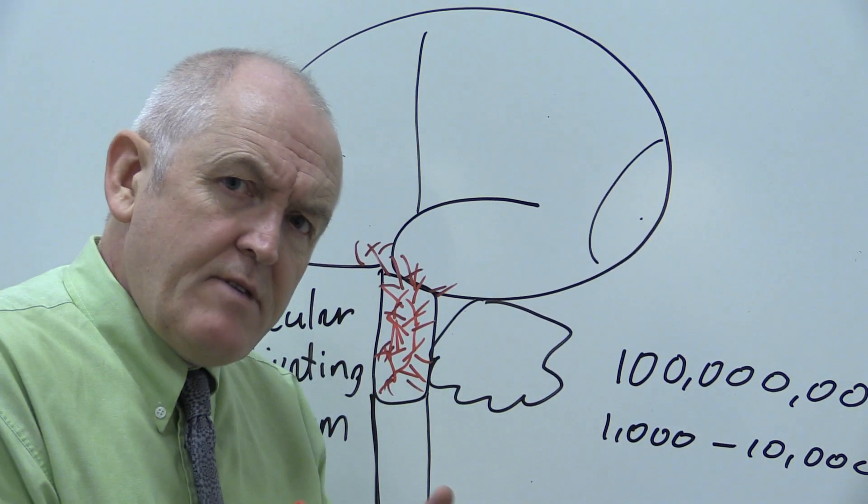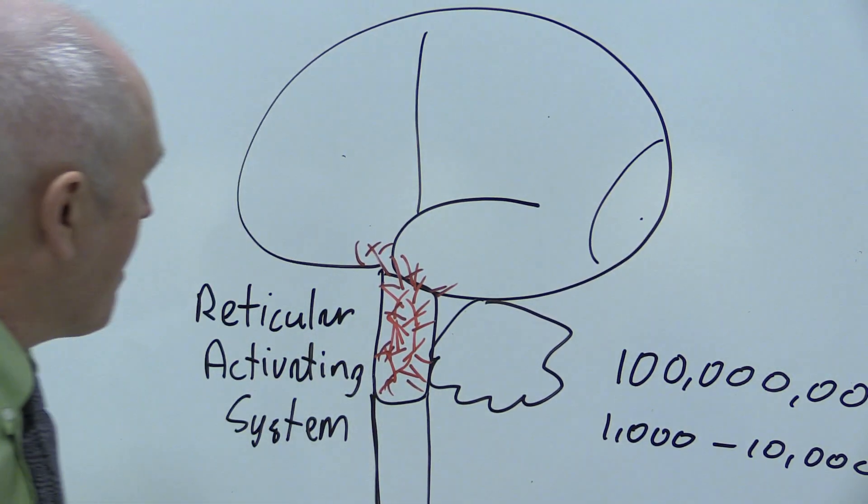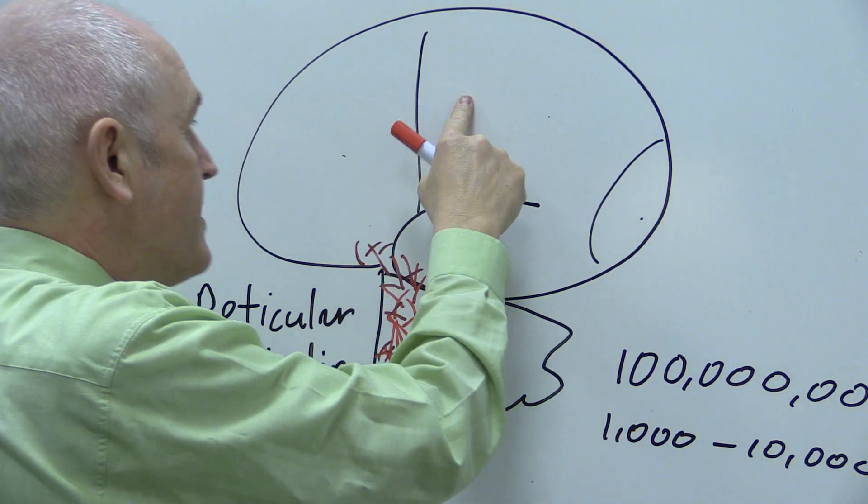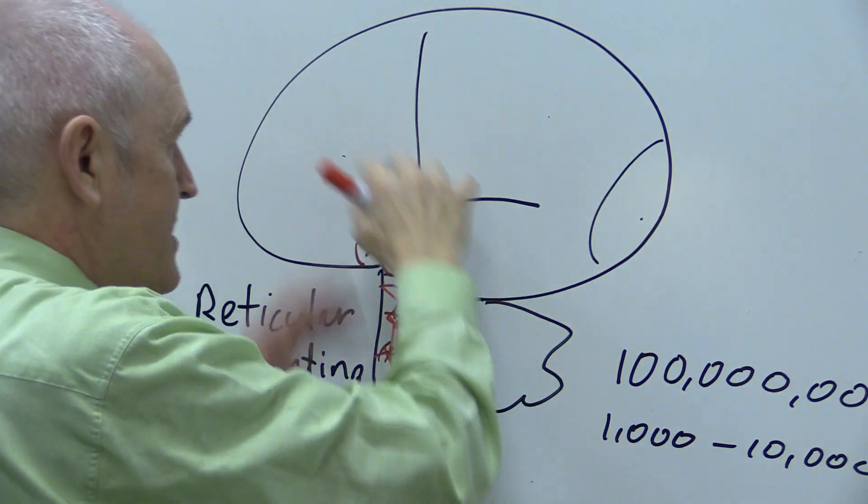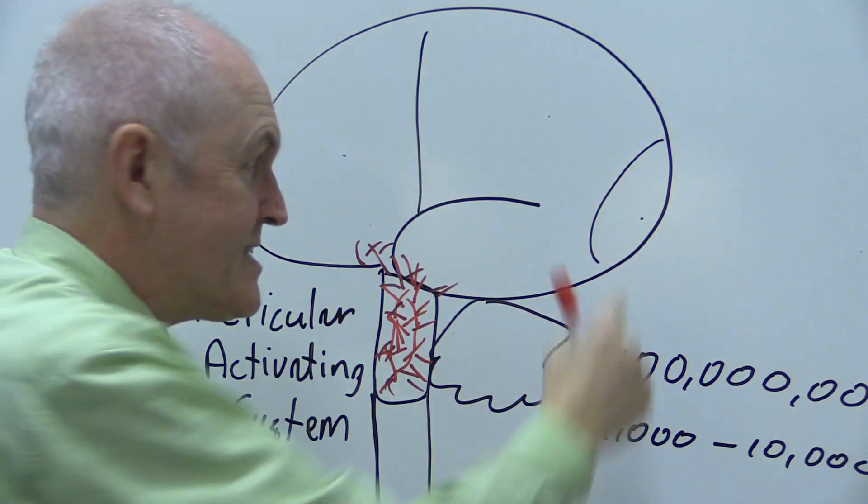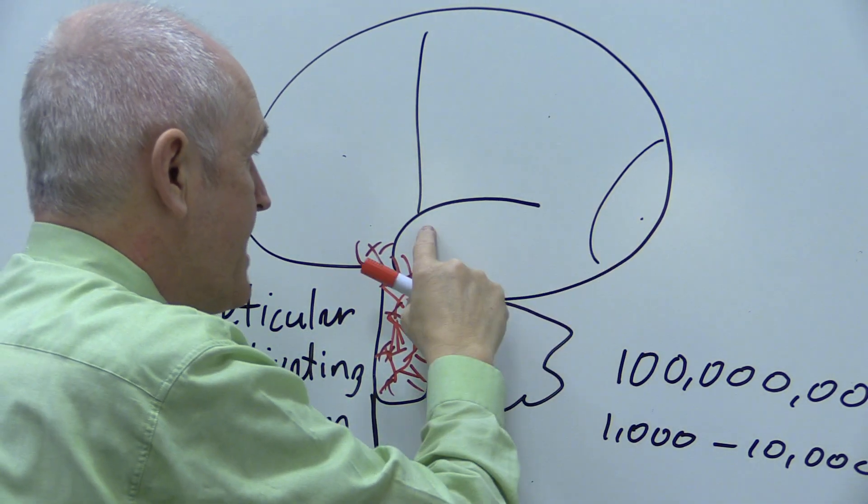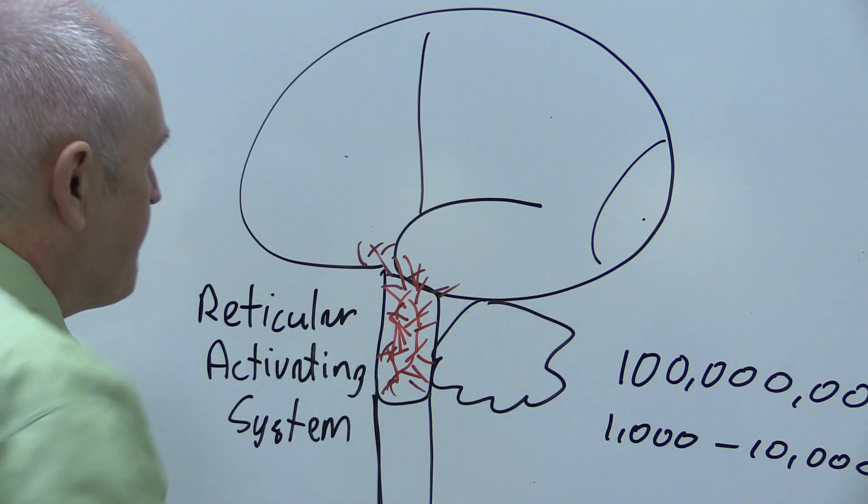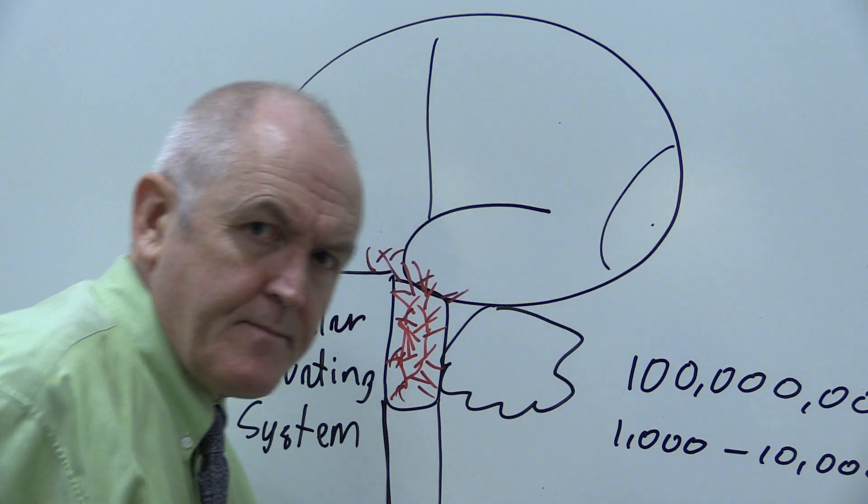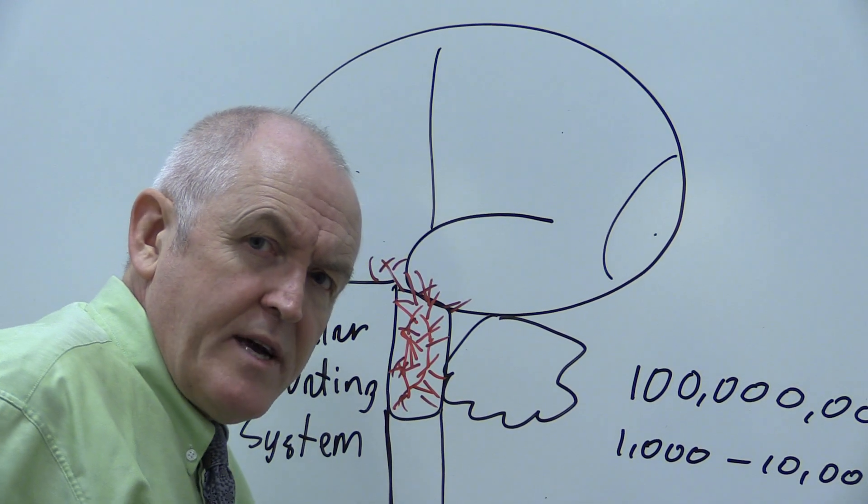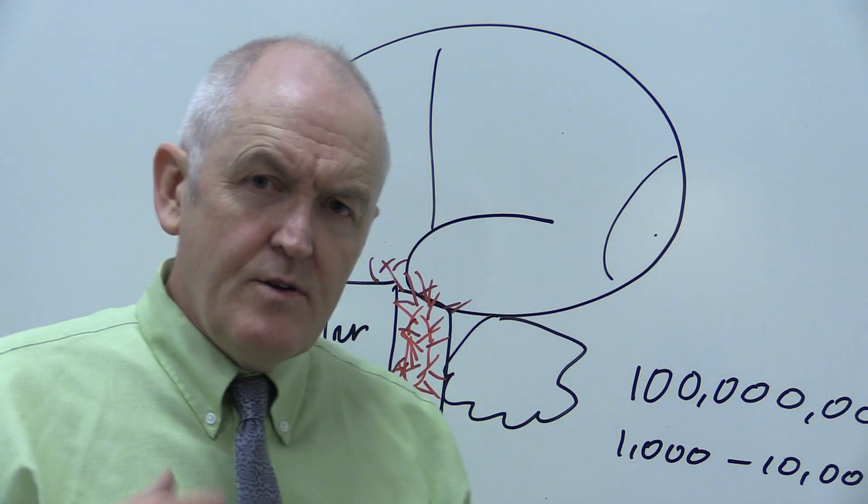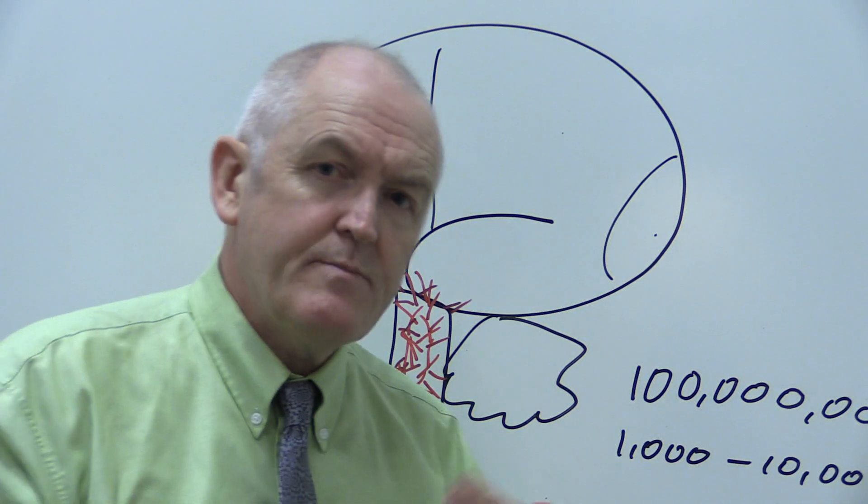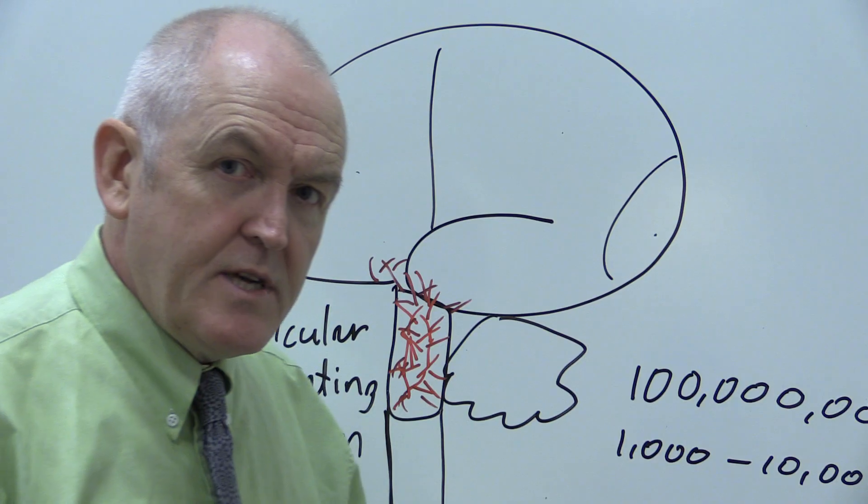So consciousness is generated by the brainstem, but of course we move, we feel, we move our eyes, we think, we see, we hear, we taste - all these are functions of the cerebrum. So in order to see you must be able to see with your cerebral cortex, but of course you need to be aware that you're seeing, you need the consciousness.